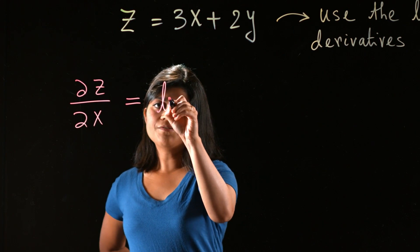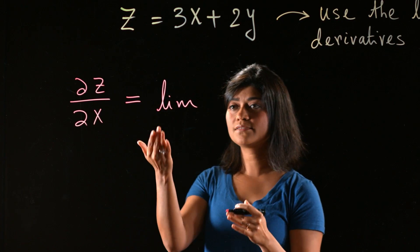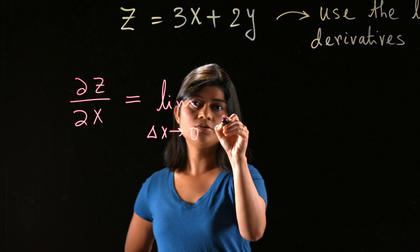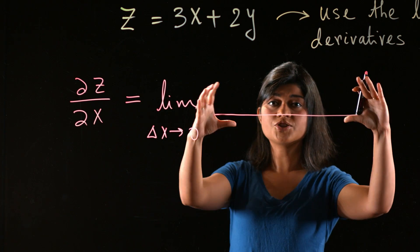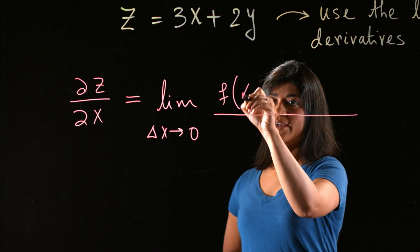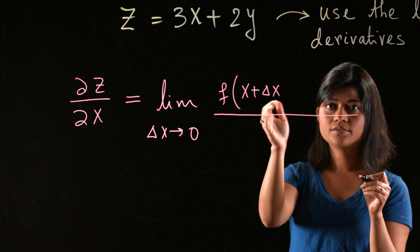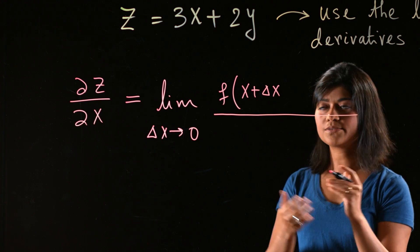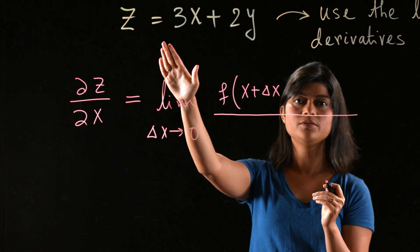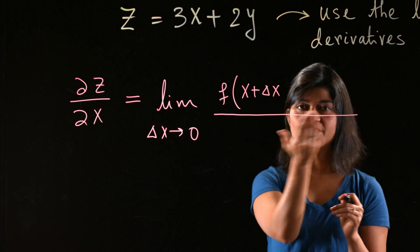Remember the definition of derivative when you have a function of one variable x? You have the limit as delta x approaches 0, and then the expression f of x plus delta x minus f of x, divided by delta x. But here, the function is not a function of one variable — there are two variables, x and y. So how does the definition change?